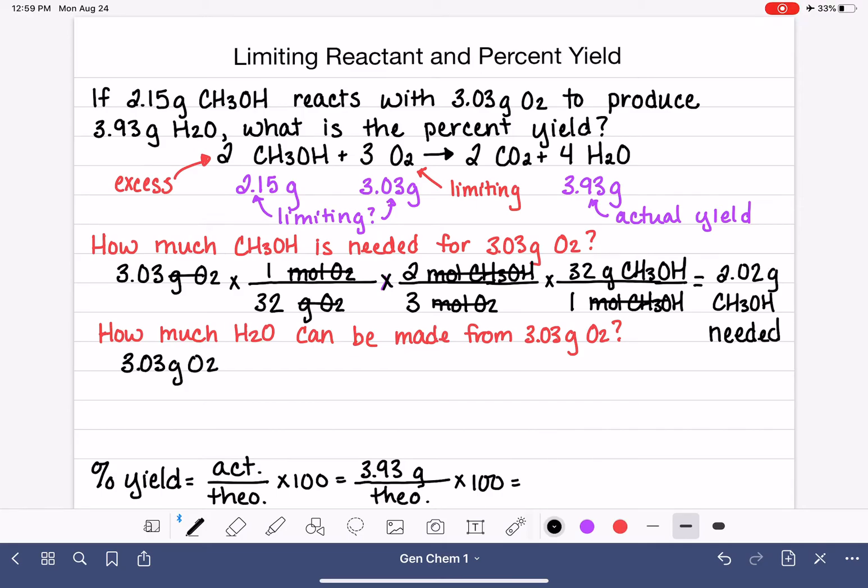Now we are ready to figure out, from 3.03 grams of O2, how much water can we actually make? So initially in this problem, we're just going to be copying the same steps, the same steps, which is where we're just converting our grams of oxygen into moles of oxygen. But now, in the next step, we're going to be converting moles of oxygen into moles of water, because now our goal is to figure out how much water we're making. Looking at the coefficients, we have 3 O2 for every 4 H2O.